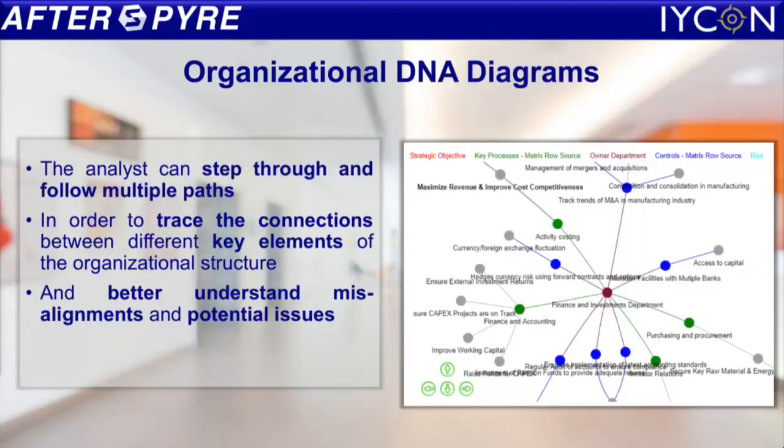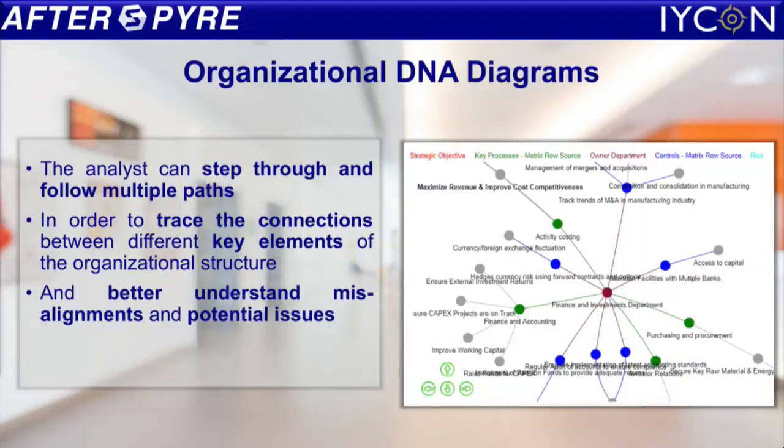The organizational DNA diagrams provide us multiple paths through which we can step through. You can start from objectives and go to risk, or in our case, we will go to technology to processes, and we can understand misalignments and potential issues.